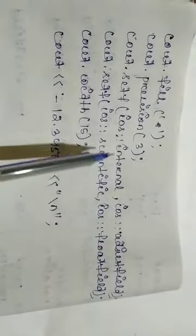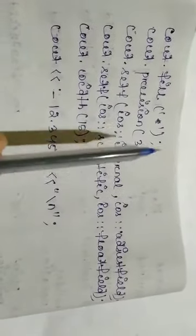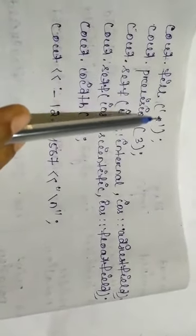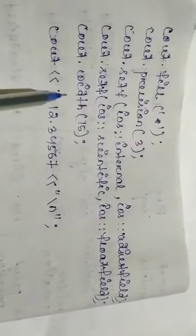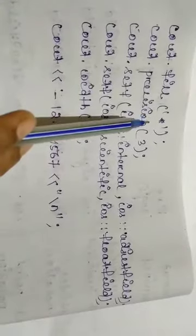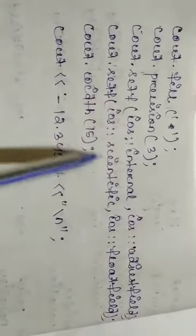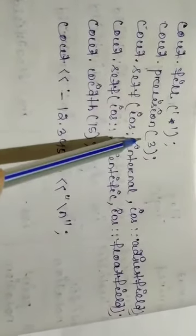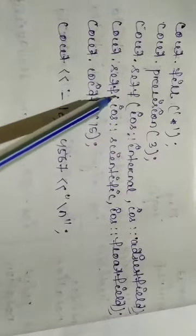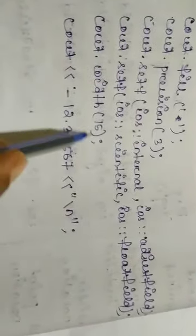Let's look at a small example where we use the setf function. Here we are using the fill function, precision function, setf function, and also the width function. The fill function is used to fill white space or free spaces with a character. Precision specifies the number of decimal digits to print. Setf is for formatting, and width is set to 15.